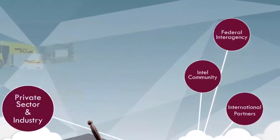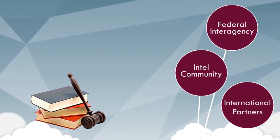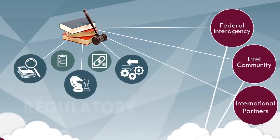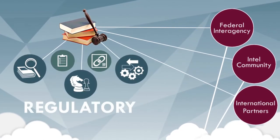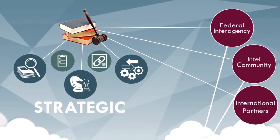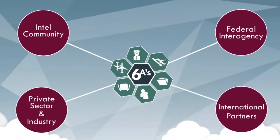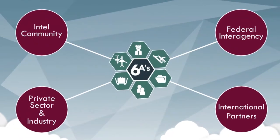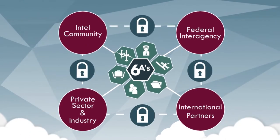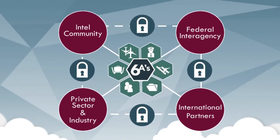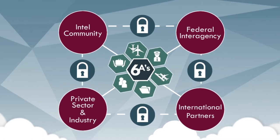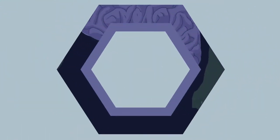While the federal interagency, intelligence community, and the international partners are focused on regulatory, tactical, operational, and strategic initiatives. Together, these four primary stakeholders maintain the safety and security of the aviation domain by focusing on the activities and transactions between the six major components of the ecosystem.